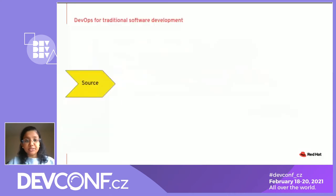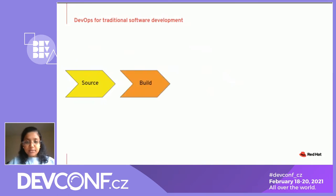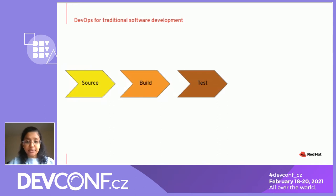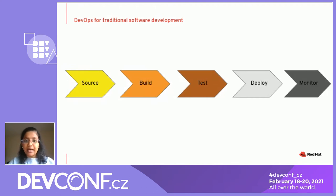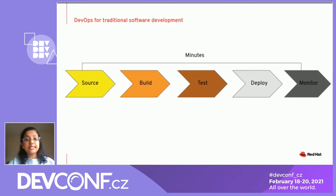When you look at your traditional software development lifecycle, we know that it comprises a series of steps. For example, you start off with creating your source code for your software or application. You go ahead and start building out this software, create your integration testing to make sure your application is meeting all the requirements. Once you're happy with these tests, you deploy it into a production environment. And lastly, you have monitoring in place to observe performance. Typically all of this takes place in a couple of minutes — this entire end-to-end lifecycle is pretty rapid and fast.